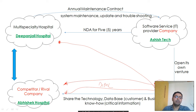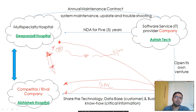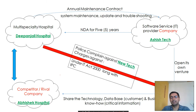Dipanjali Hospital came across the data breach and found out that New Tech — through Mr. VJ — had committed it. For more clarity, Abhishek Hospital and Dipanjali Hospital are rivals and competitors, both operating in the same locality and same industry. As a result, Dipanjali Hospital filed a police complaint against New Tech and Mr. VJ, and both were charged under the IT Act as well as the IPC Act.